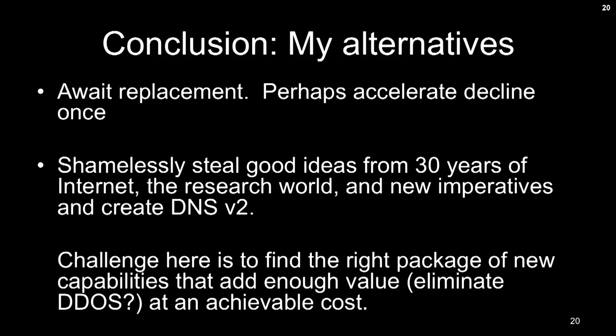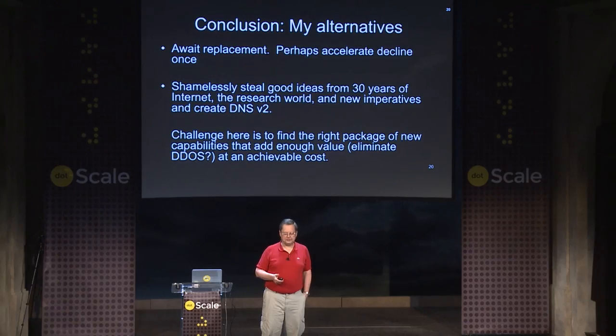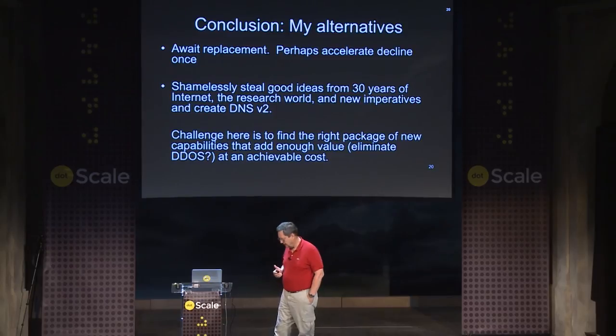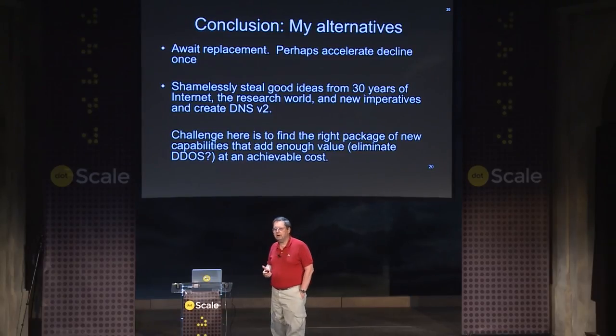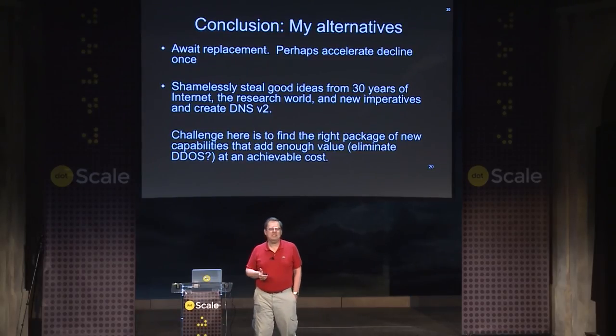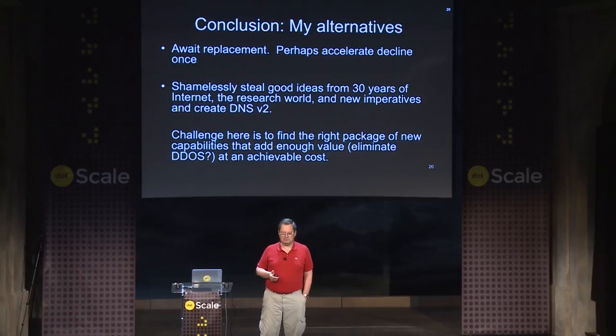In conclusion, these are the alternatives. One is to wait for a replacement — as soon as a research project is ready and solid, figure out a way to make DNS die and make room for a new protocol scheme. My theory is the second: we ought to shamelessly steal the good ideas coming out of the research world and from experience.